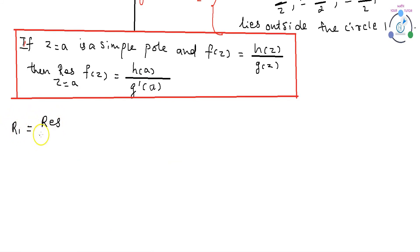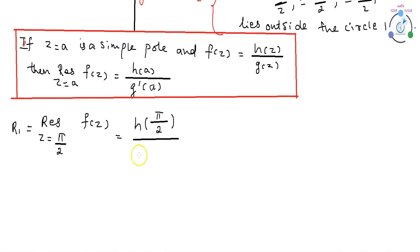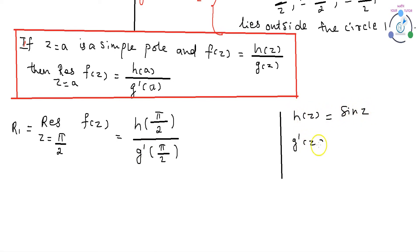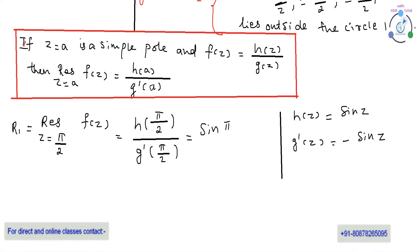To find the residue at z = π/2, substitute z = π/2 in the formula. Then Residue at z = π/2 of f(z) = h(π/2) / g'(π/2). Here h(z) = sin(z) and g'(z) = -sin(z). So h(π/2) = sin(π/2) = 1 and g'(π/2) = -sin(π/2) = -1. Therefore the residue at z = π/2 is 1/(-1) = -1.